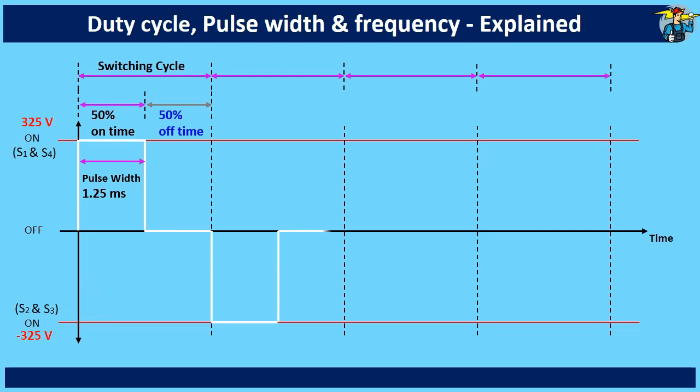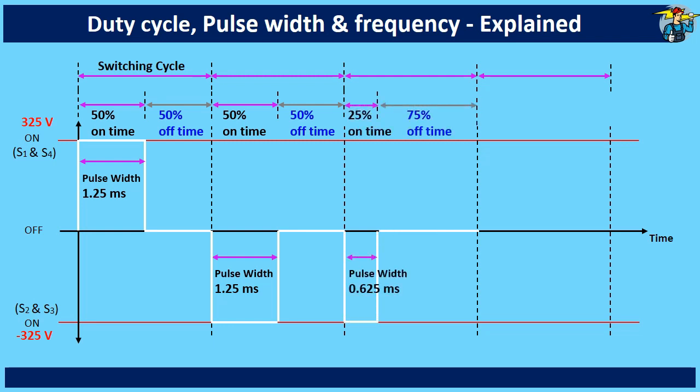Here in the second switching cycle, negative side voltage is generated by closing the pair of switches S2 and S3. Third switching cycle is also on the reverse side but with 25% duty cycle. Fourth cycle is on the positive side with a 100% duty cycle.